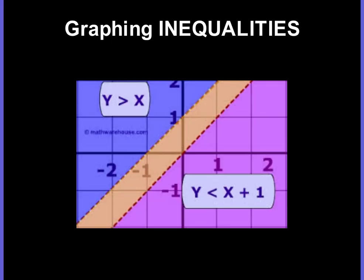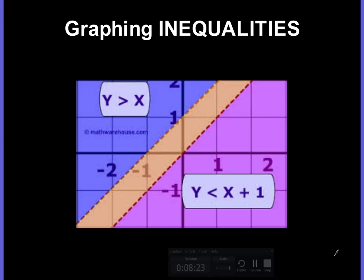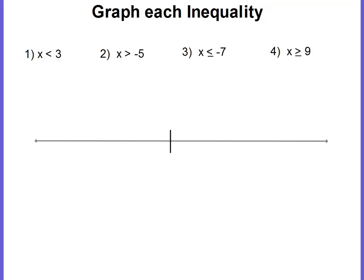So now let's talk about graphing inequalities. We're going to graph each inequality on the number line. Number 1: x is less than 3. We need to put a circle at the 3 on the number line. Do I need to fill in my circle or do I leave it empty? Because there's no equal line, we're going to leave it an empty circle. The alligator is eating the 3, so nothing can go past the 3 — our x line is going to go to the left. This is what the graph of x is less than 3 looks like.